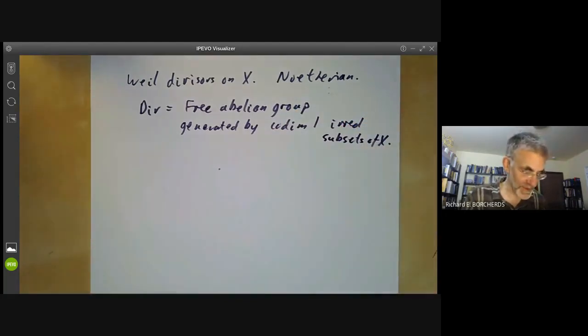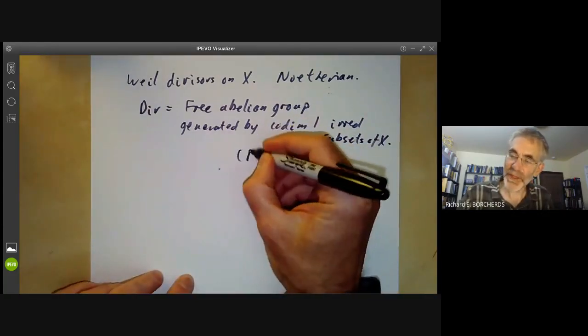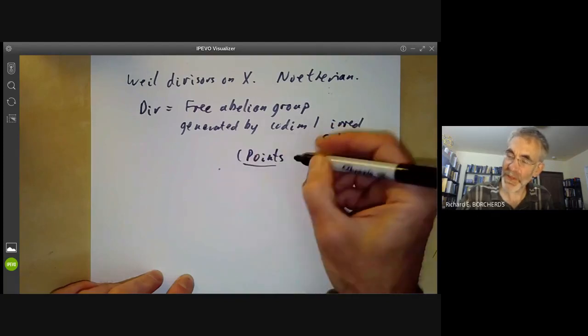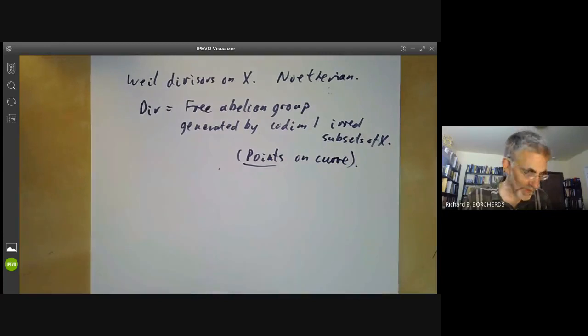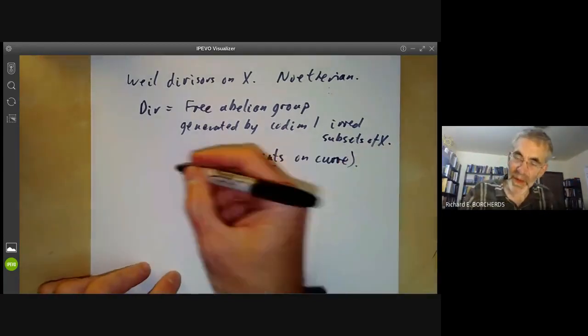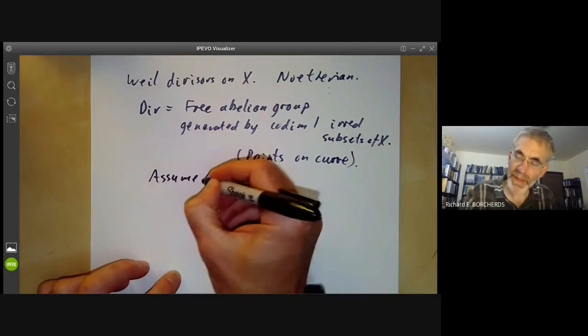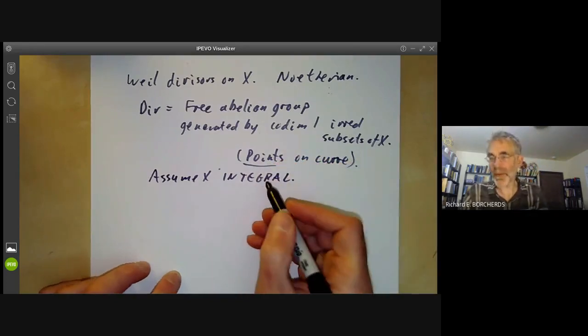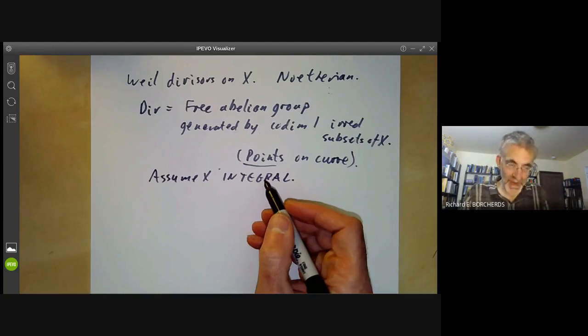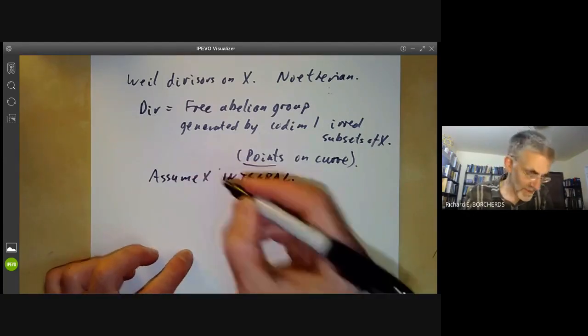This corresponds to points or closed points on a curve, which is what we had before. We're going to assume X is integral, which is not necessary, but covers most cases and avoids a certain amount of complication.